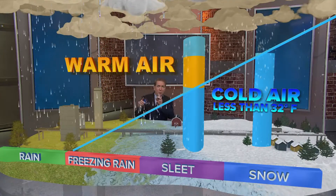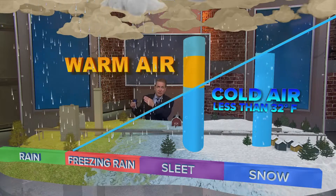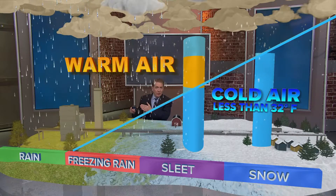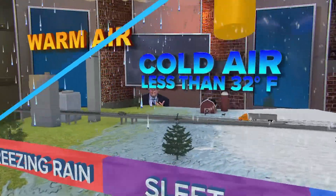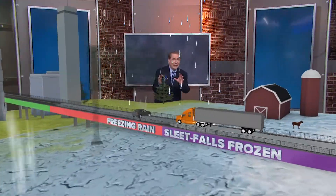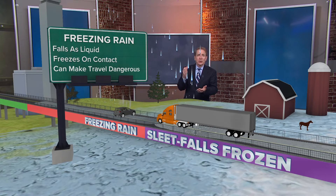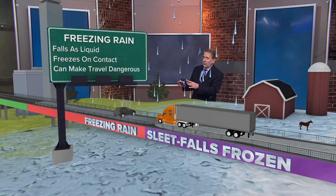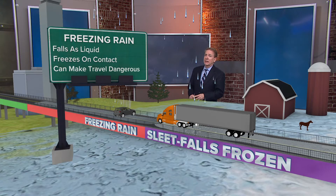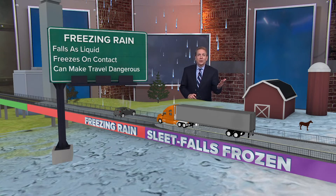This is the worst scenario though. You have this huge warm layer and it starts to snow and then melts as rain, and then hits the ground and freezes. And that's what we call freezing rain — and that's the worst. It falls liquid, but then it collects on power lines and trees and can actually bring down some power lines.